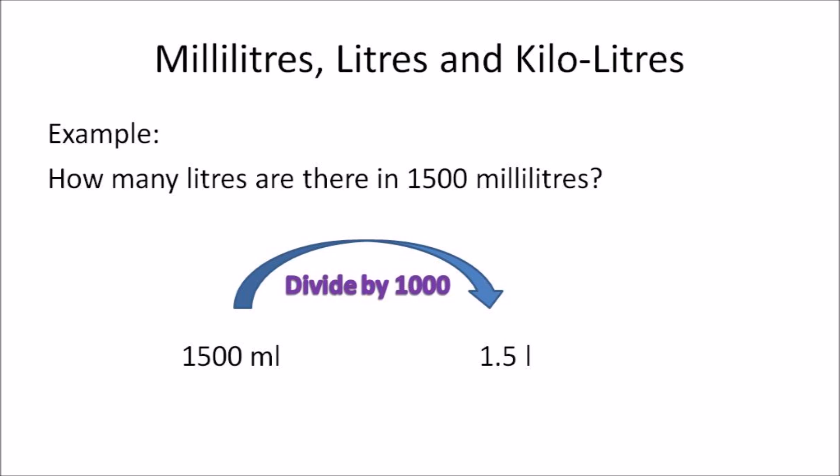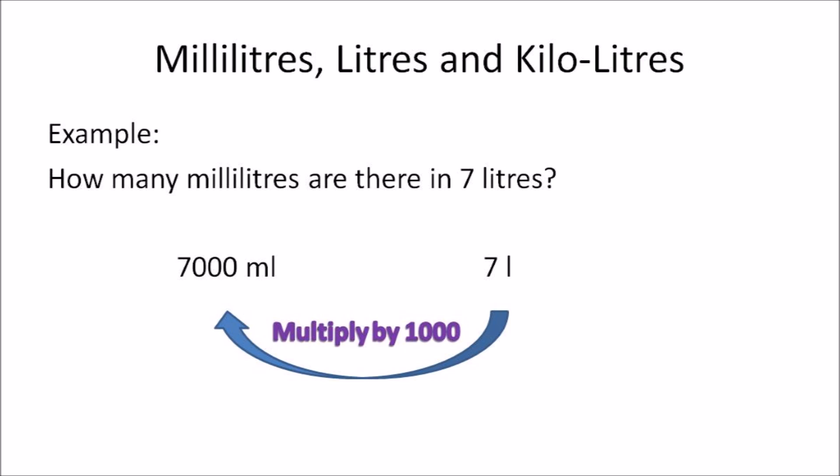How many liters are there in 1500 milliliters? That means you need to convert milliliters to liters. The order of operation is simple — you divide milliliters by 1000. So 1500 milliliters divided by 1000 gives you 1.5 liters.